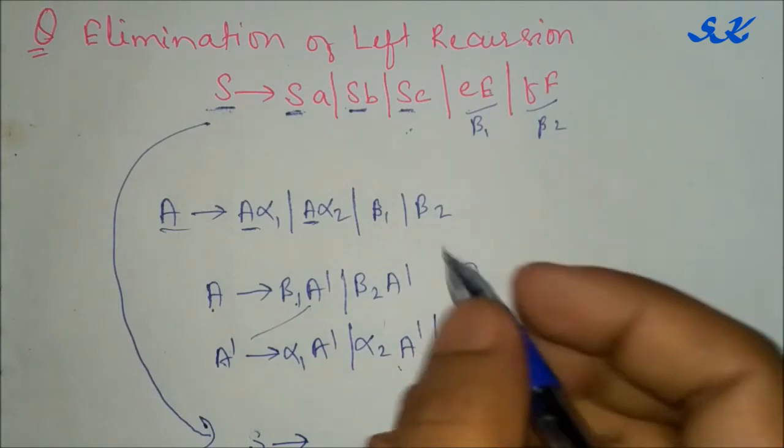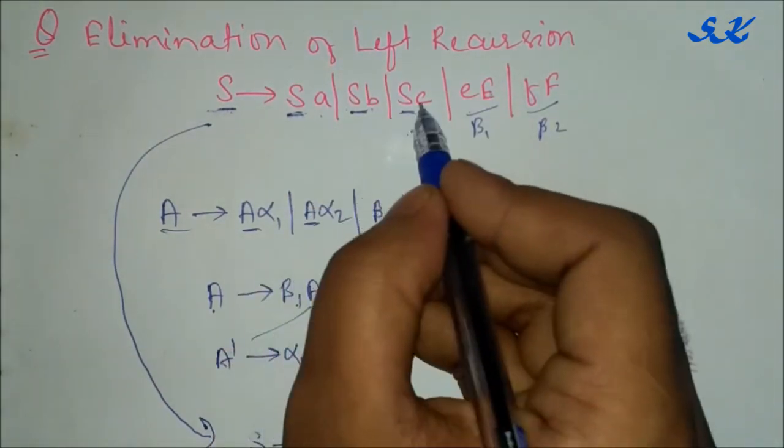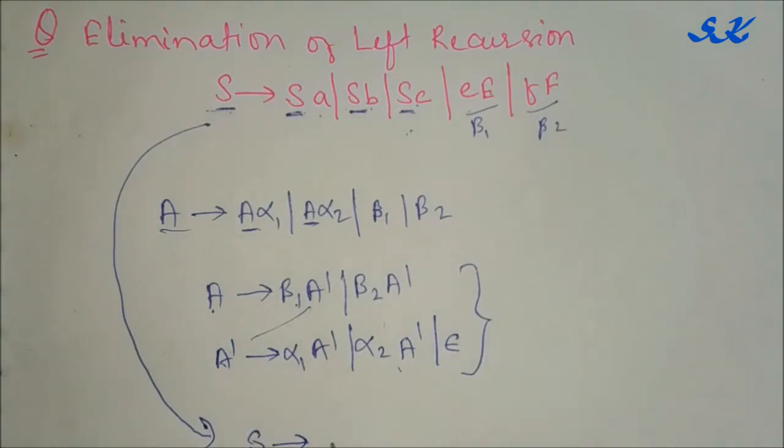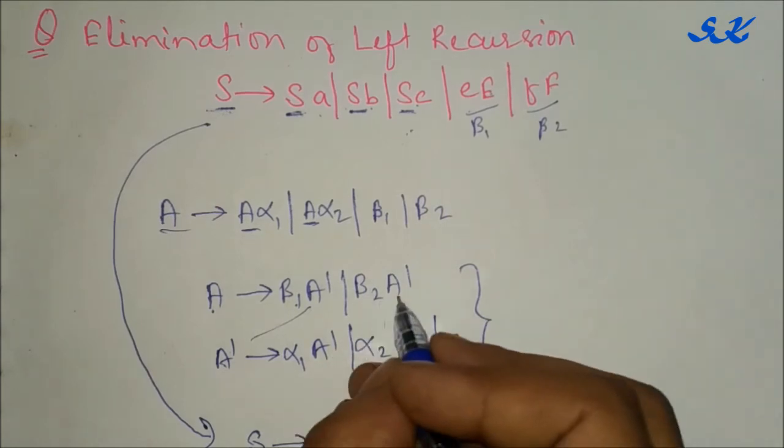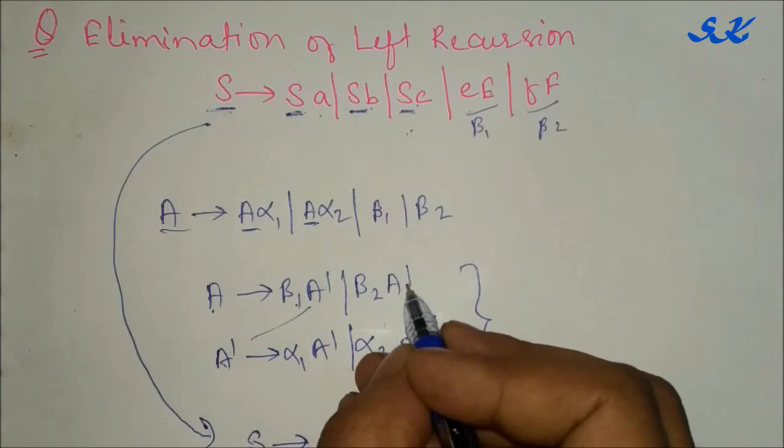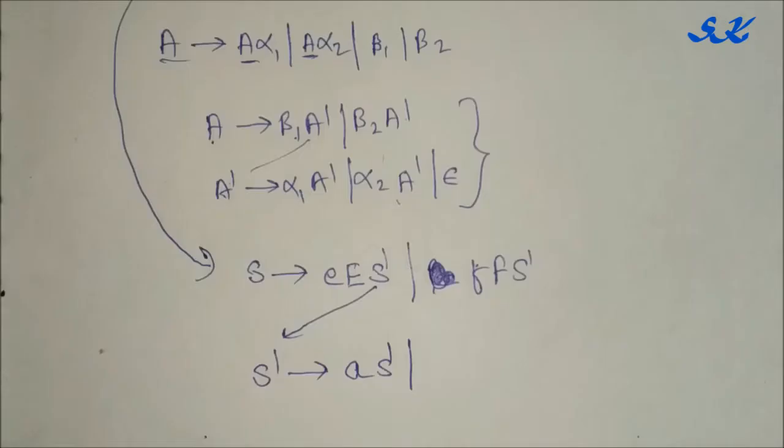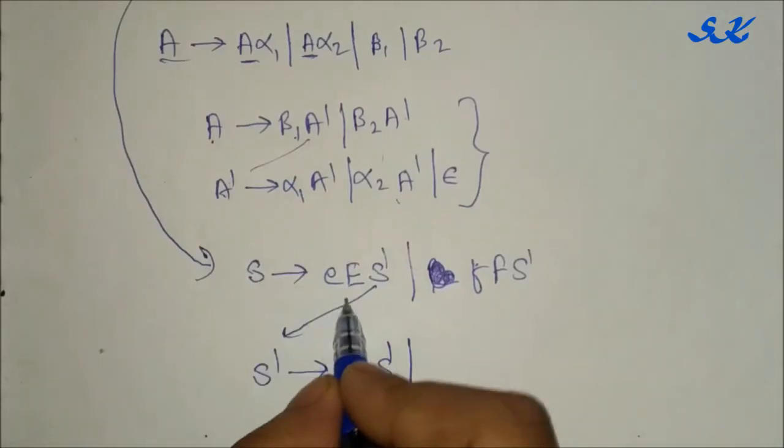Here alpha, alpha, alpha. So S goes to E, capital E, S dash. Again, beta 1 and beta 2, S dash. Again F, capital F, S dash. Again S equals to beta 1 S dash and beta 2 S dash.